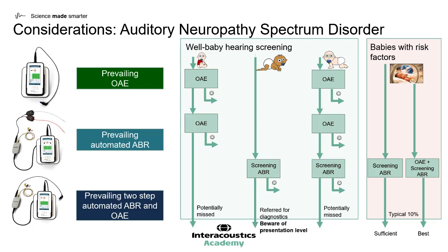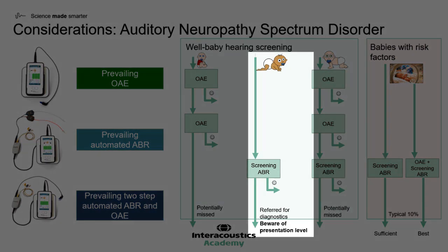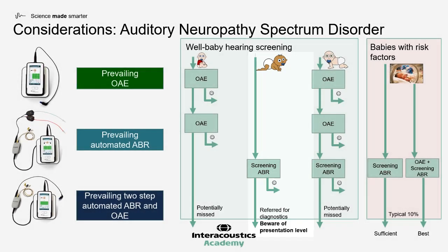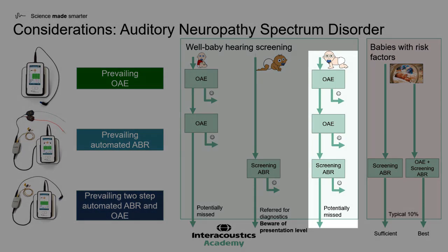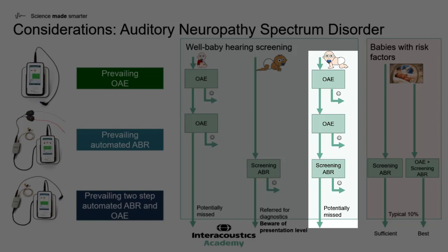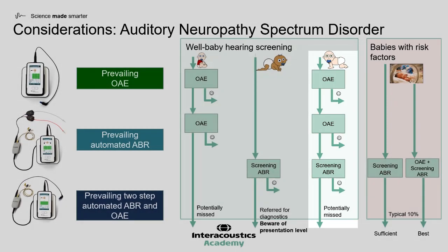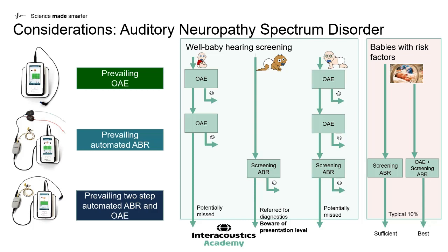If a screening ABR approach is taken in healthy babies, this is the best approach for diagnosing auditory neuropathy spectrum disorder, as we would expect these babies to fail on this test. With a two-step OAE and automated ABR approach, again in the well-baby population, many babies with auditory neuropathy spectrum disorder can be missed because they would have passed out of the newborn hearing screening program during the otoacoustic emission stage.